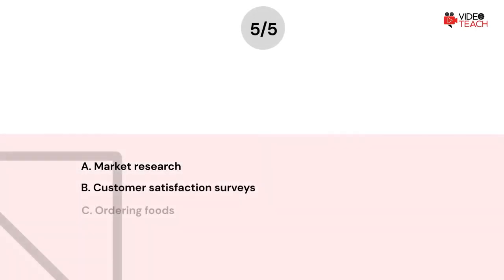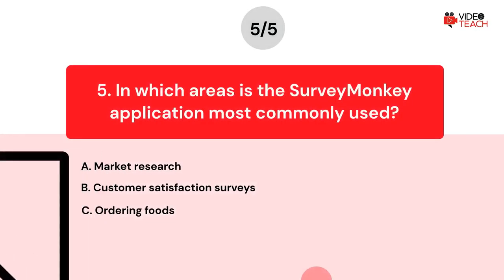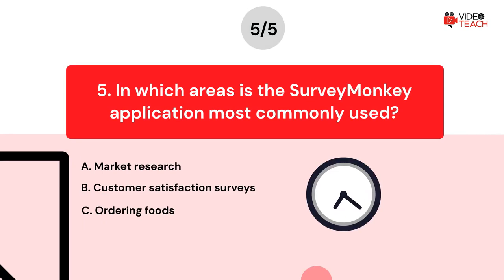Question number five. In which areas is the SurveyMonkey application most commonly used? Option A: Market Research. Option B: Customer Satisfaction Surveys. Option C: Ordering Foods.